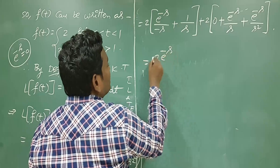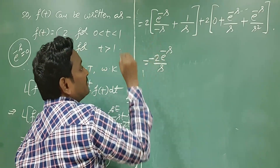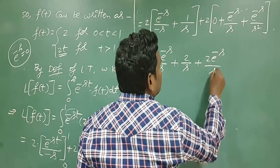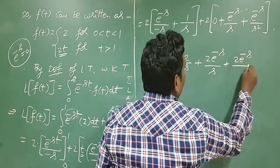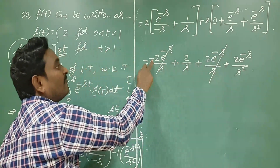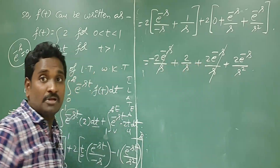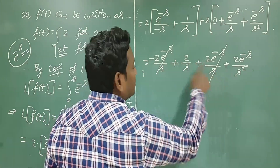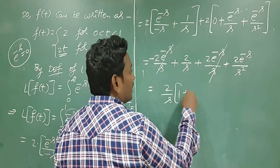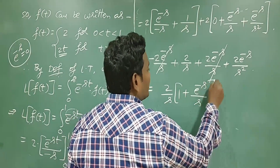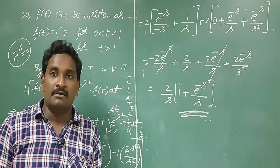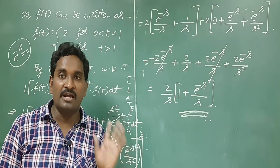Separating the terms, we get 2 times e to the power minus s over s, plus 2 times e to the power minus s over s squared. We observe that the negative e to the power minus s over s term and the positive term cancel each other. Taking 2 over s as the common factor, the final answer is 2 over s times (1 plus e to the power minus s over s). This is the Laplace transformation of the given function. This problem is very very important — please prepare for your end examinations. Thank you very much.